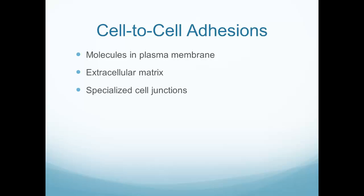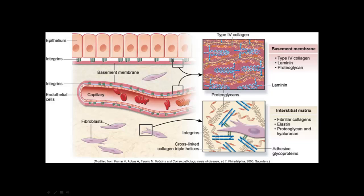Cells combining together create junctional complexes. Looking at this diagram, we can see endothelial cells connecting to the basement membrane using integrins to form tissue — in this case, a capillary. The interstitial matrix holds tissues together on a more global level. There's a lot going on at the cellular level that generates structure in the body.